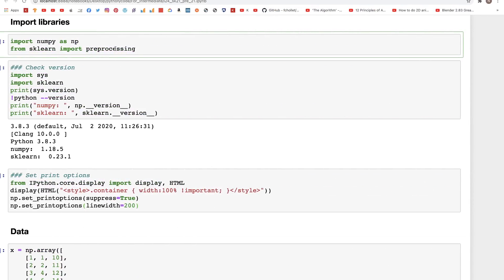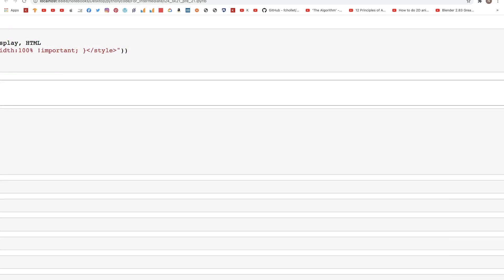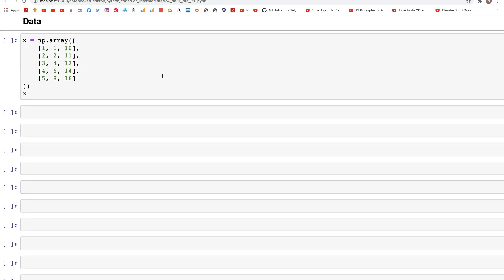Now in Jupyter Notebook I've imported two libraries: numpy and preprocessing from scikit-learn. These are the versions and additionally I've written these lines down. This is just to print the output of array so that it does not wrap in the cell. I'll put this in the description of the video so you can copy it.